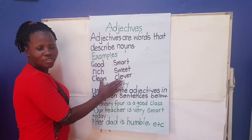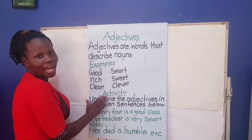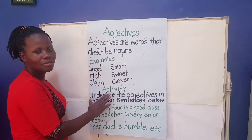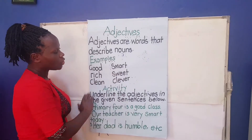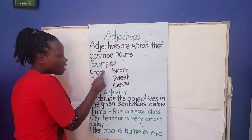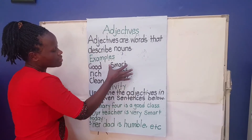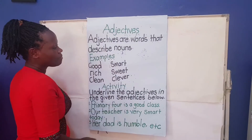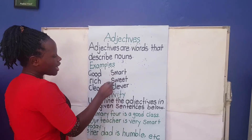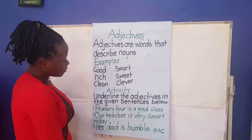So, as you're at home there, get like three of them and describe any nouns of your choice. You can describe it in a sentence, or you can write one adjective with a noun. For example: I'm a smart girl. I ate a sweet.